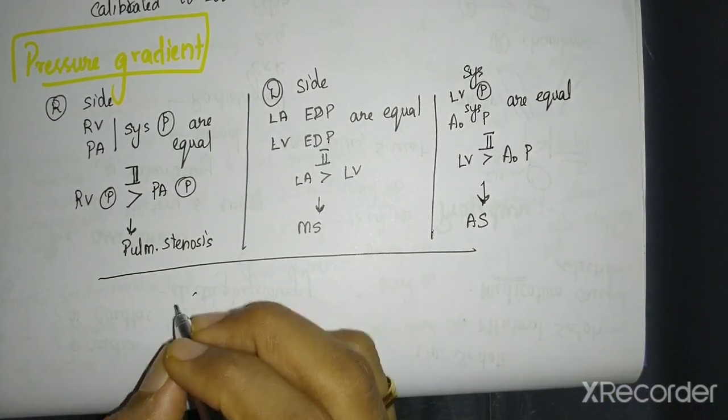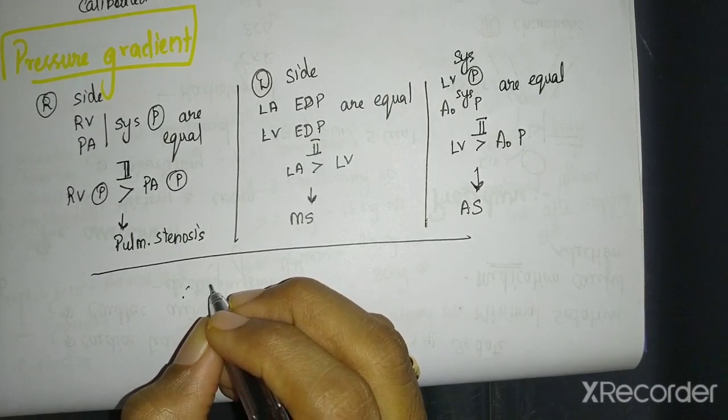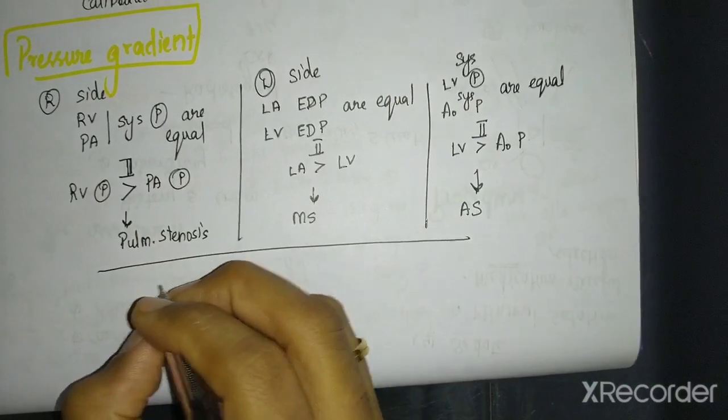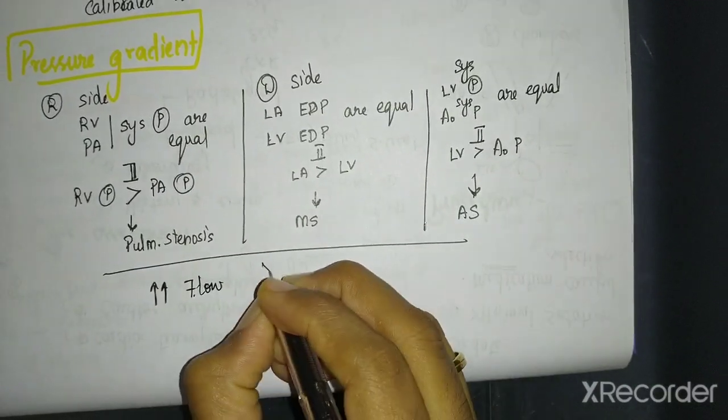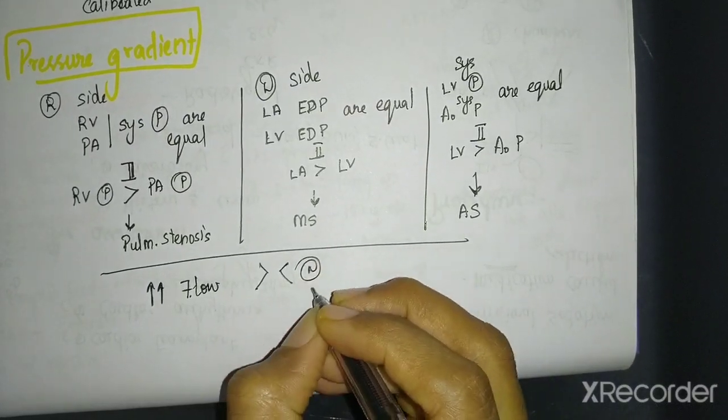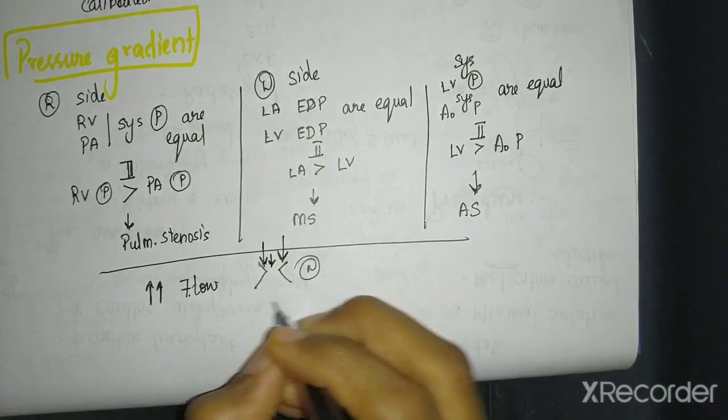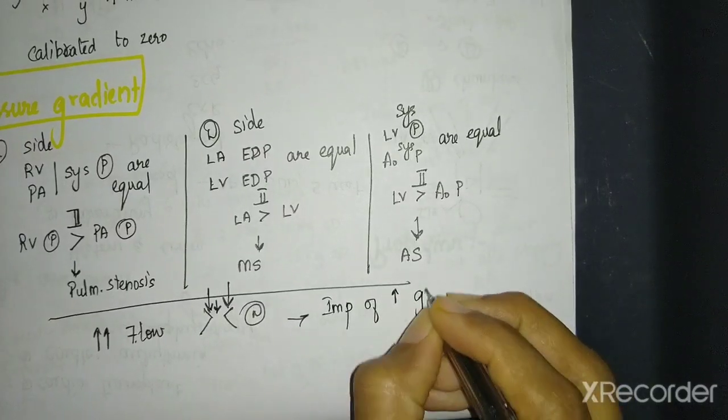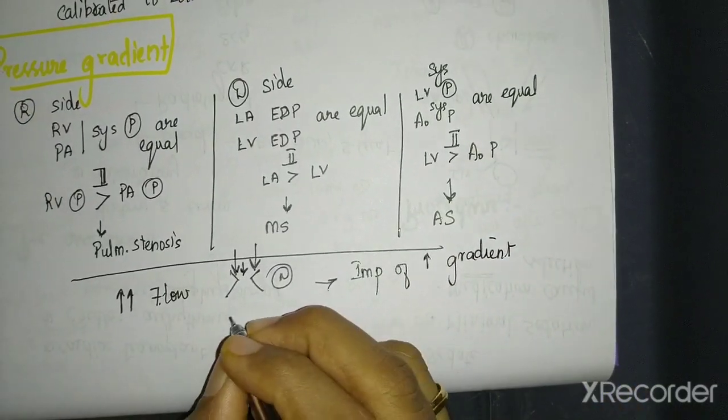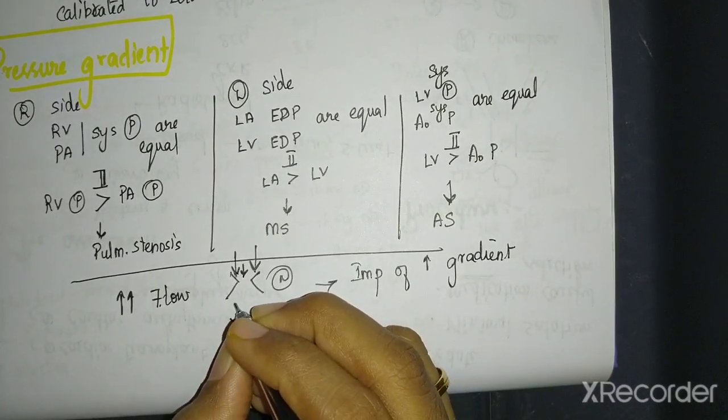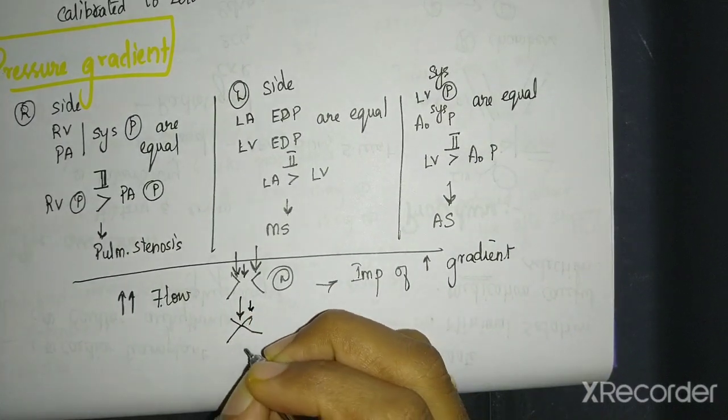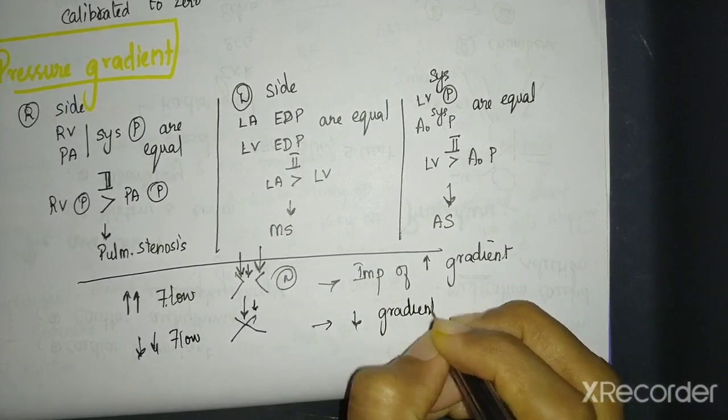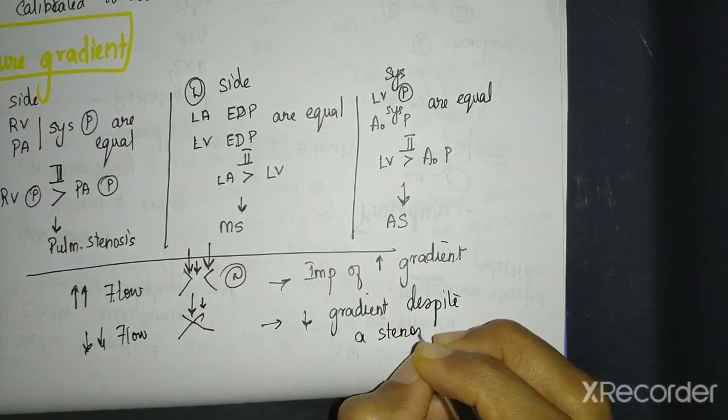The only shortcoming or the point that you will have to keep in mind is there are some things which can underestimate or overestimate the presence or absence of these. For example, if there is increased flow through any particular valve, this valve is normal. But instead of this much flow, if there is too much flow, it looks as if there is a functional stenosis. So increased flow will give an impression of increased gradient. Imagine the reverse. It is actually a very, very narrow valve. But instead of this much flow, there is only a very small flow happening. So in this case, the decreased flow may cause decreased gradient despite a stenosed valve. So these two points has to be kept in mind.